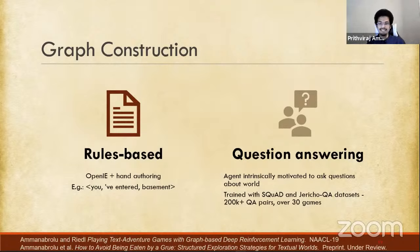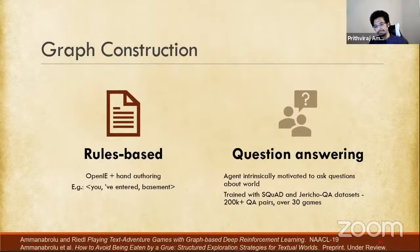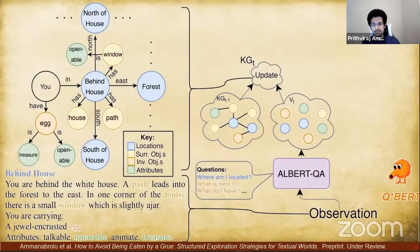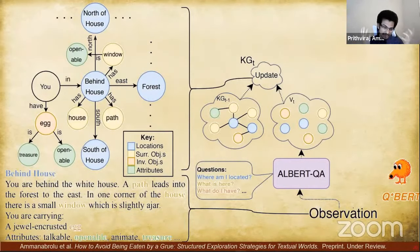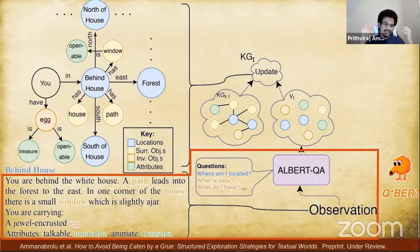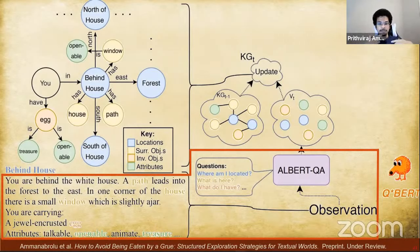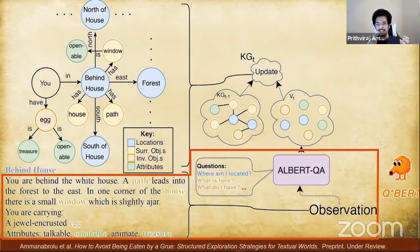Using that dataset, I designed the QBERT agent. The general gist is: the agent builds a graph of the world by asking questions as it moves along. The agent receives a description of the world, and this description goes immediately to a question answering module. This QA module takes an input question, uses the observation as context, and highlights the span within the context that best answers the question. The agent asks questions like: where am I, what do I see around me, what do I have in my inventory, what are the attributes of things?